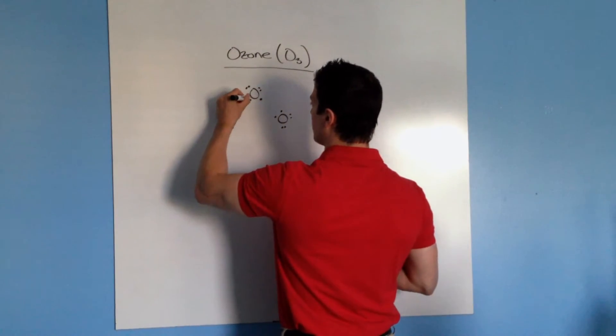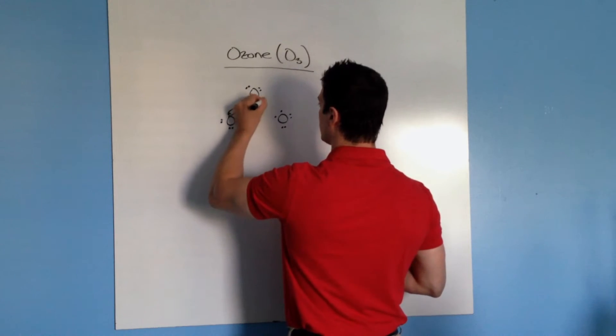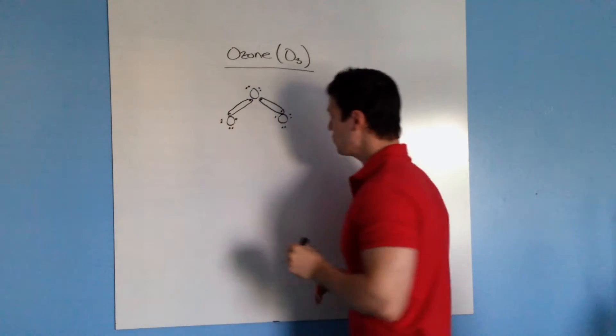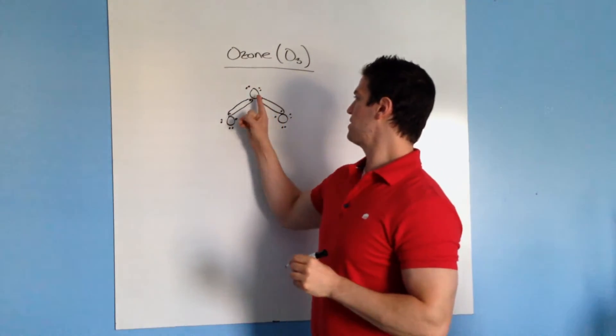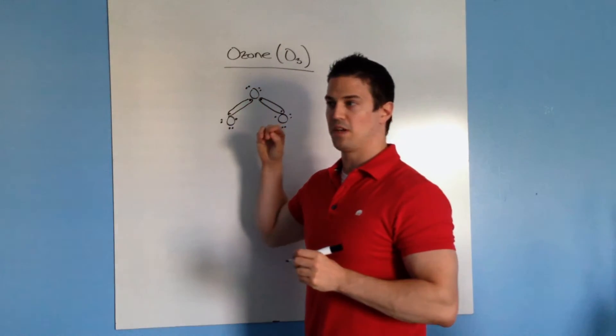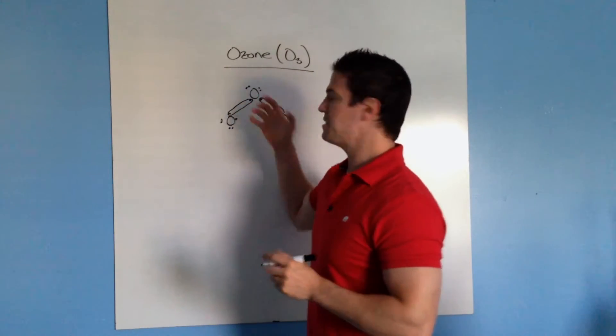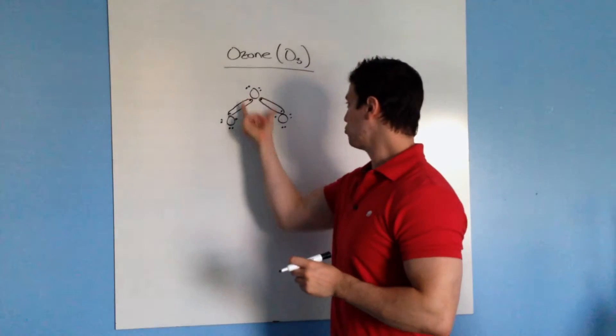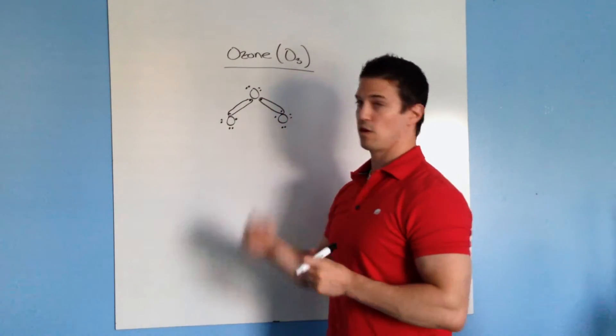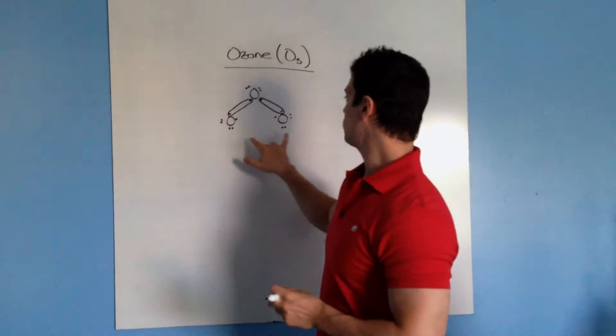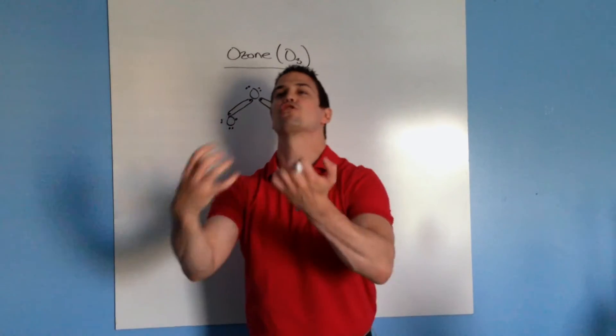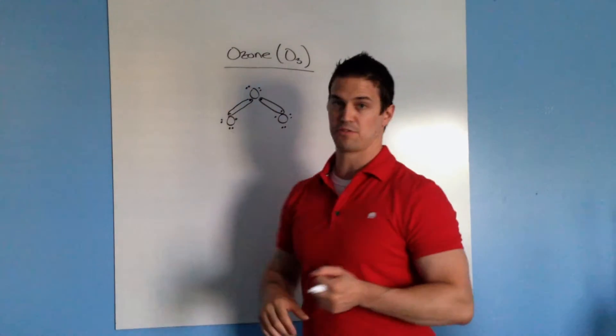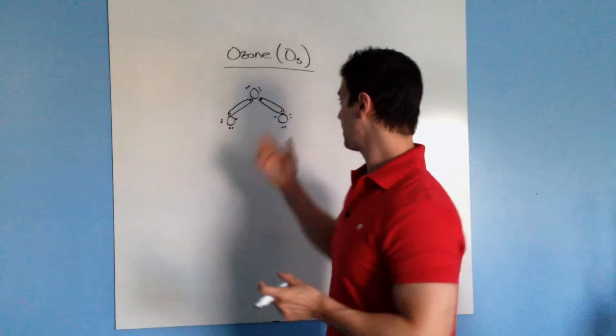So this central oxygen bonds with each of these oxygens here. Now because this one is filled, if you want to think of it, it's less electronegative. It's sharing two of its electrons where this one and this one are only sharing one. So these two are more electronegative, so they attract more electrons than this one because this one fulfills the octet rule.